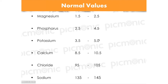We're going to go over these quickly to show you what they are using images. Magnesium is 1.5 to 2.5, then phosphorus, potassium, calcium, chloride, and sodium. I've ordered them from the smallest number to the largest number.